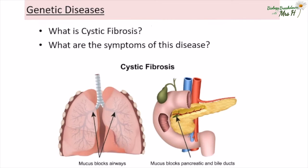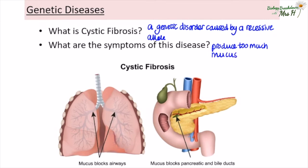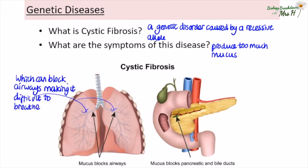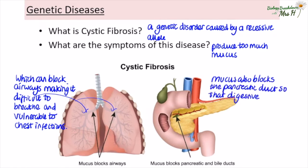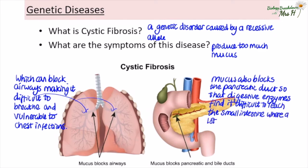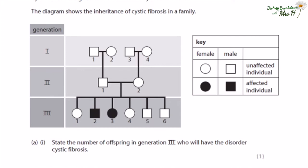You may get asked questions about genetic diseases such as cystic fibrosis, which is a genetic disorder caused by two recessive alleles. People with this condition produce too much mucus, which can block airways making it difficult to breathe, and people are more vulnerable to chest infections. The excess mucus can also block the pancreatic duct so that digestive enzymes can't reach the small intestine, making digestion difficult and potentially leading to difficulties with growth, energy, and malnutrition.